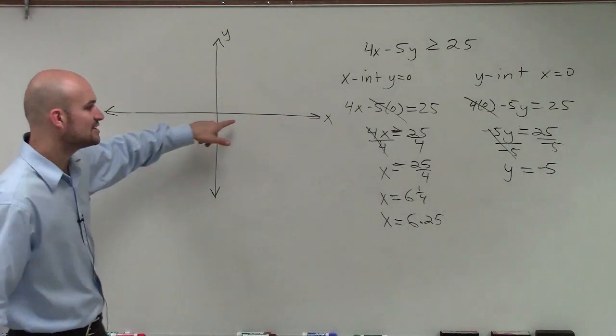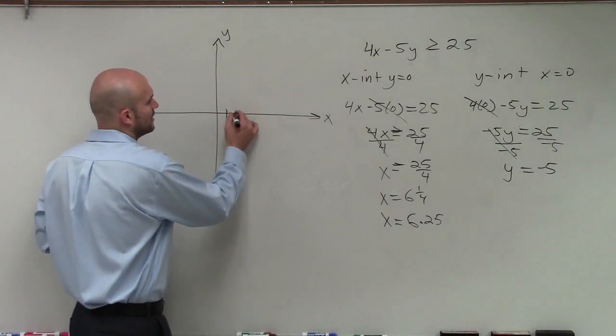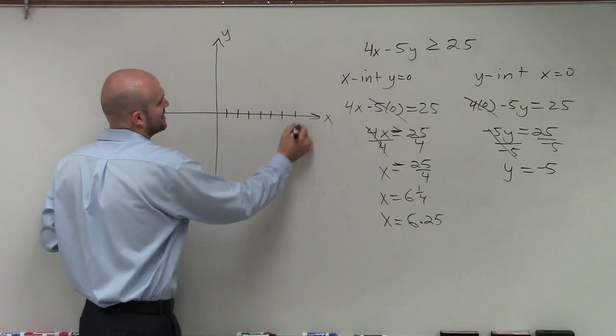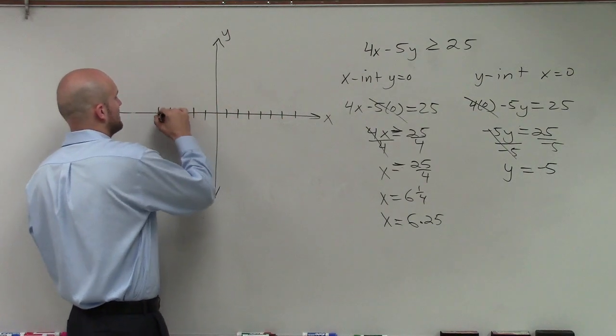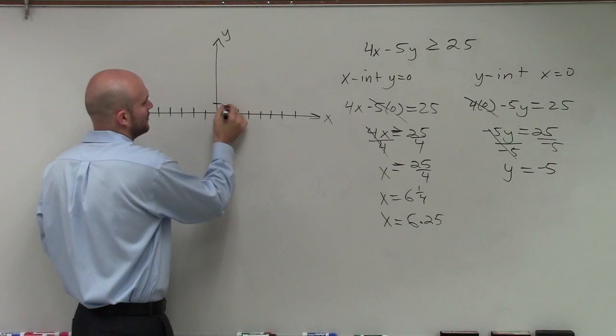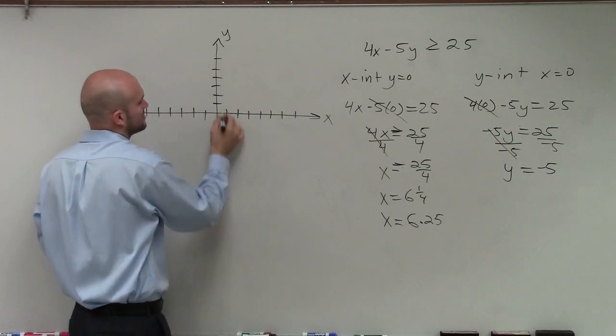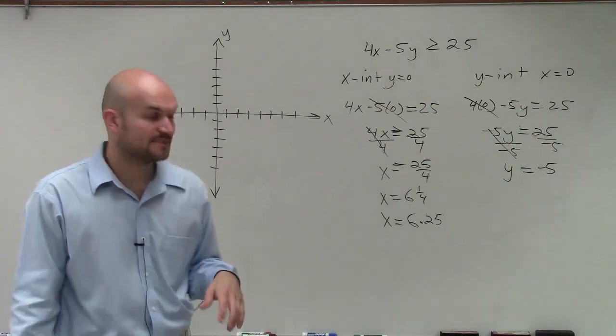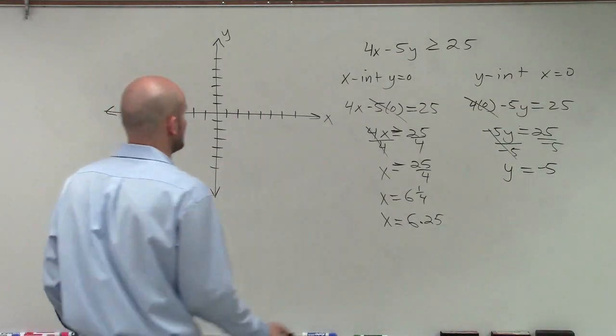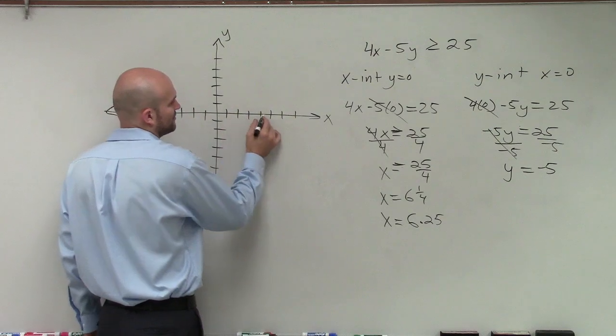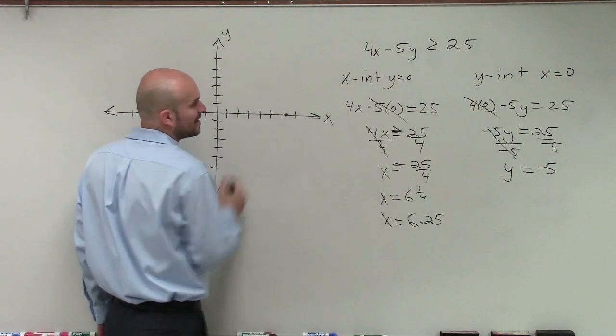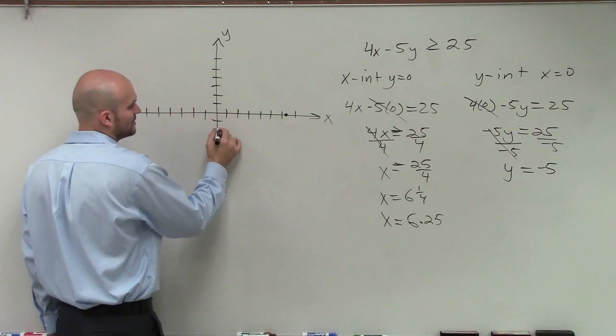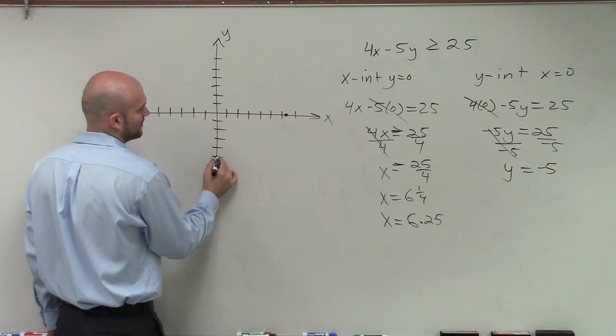So anyways, my x-intercept is 6.25. So we say the x-intercept is at 6.25. Therefore, I need to go to the right, 6.25 and then my y is negative 5.